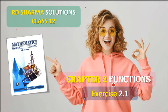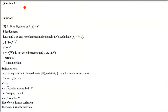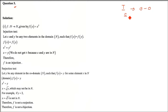This is Adi Sharma solution class 12 chapter 2 functions, exercise 2.1. Question number 5 requires us to classify the following functions as injection, surjection, or bijection. Injection is one-to-one, surjection is onto, and bijection is both one-to-one and onto.